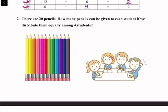Question Number 2: There are 20 pencils. How many pencils can be given to each student if we distribute them equally among four students? If we distribute 20 pencils equally among four students, then each student gets 20 divided by 4 = 5 pencils.